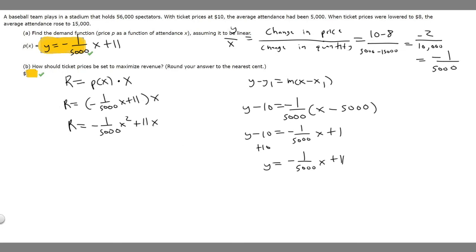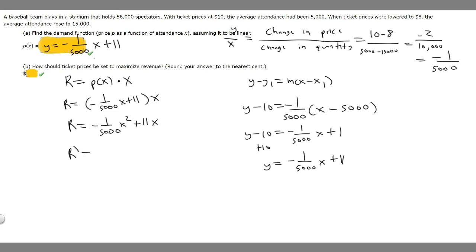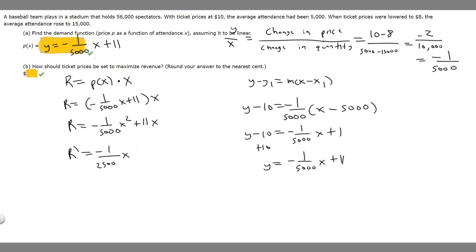When we want to find the maximum revenue, we take the derivative and set it equal to zero, because we have a maximum where the derivative equals zero. So let's find R prime. The derivative gives us negative 2 over 5,000 x plus 11, which simplifies to negative 1 over 2,500 x plus 11.